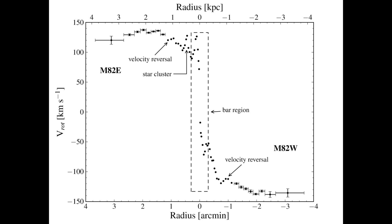In contrast with the nearly Keplerian gas dynamics suggested by previous measurements of HI and CO emission from the ISM, which imply a truncation in M82's dark matter halo, our data show that the rotation curve is in fact flat on 1 to 4 kiloparsec scales.